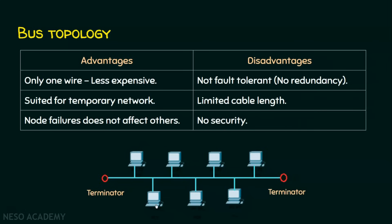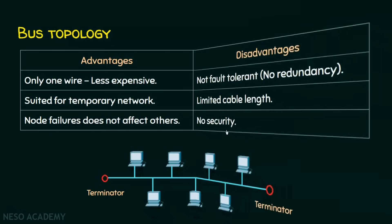Also, the cable length is limited to a certain range. Since every node participating in the network will receive a copy of the signal, there is no security in this approach. Those are the advantages and disadvantages of bus topology.